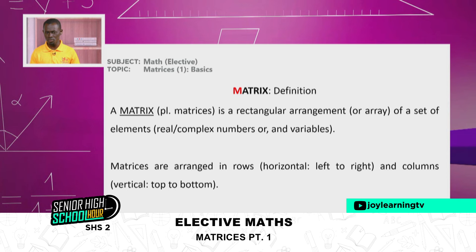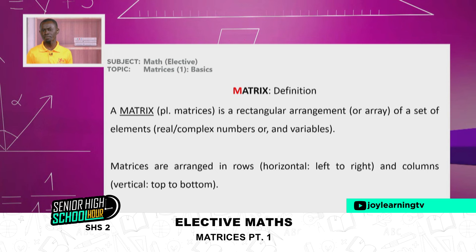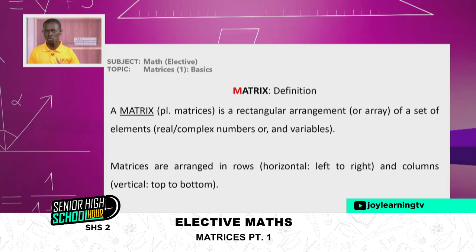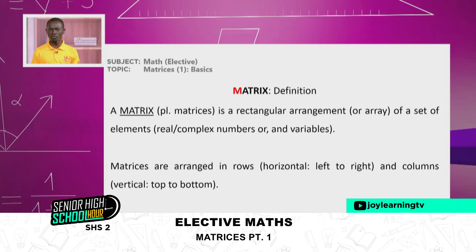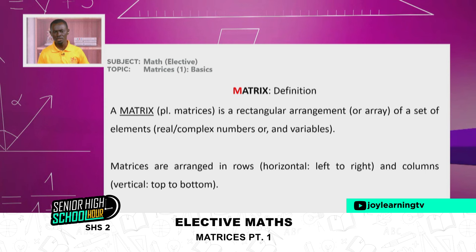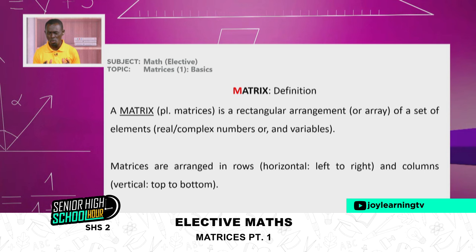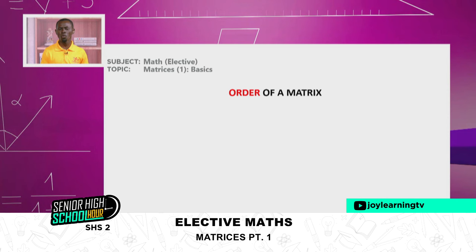Please take note of this because it leads us to another important concept. A matrix is a rectangular arrangement or array of a set of elements — which could be numbers, alphabets, variables, symbols, etc. These elements are arranged horizontally and vertically so that horizontally we have rows and vertically we have columns. When we have this kind of arrangement, we should be able to describe the arrangement. We have that arrangement called the order of the matrix.